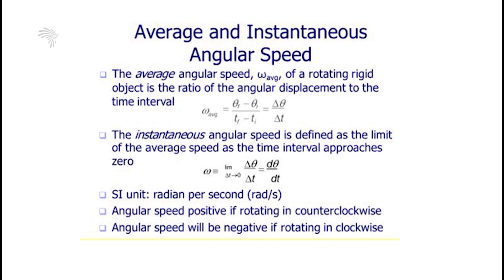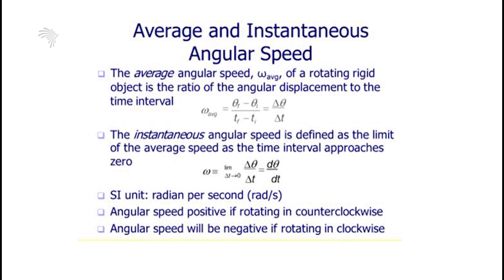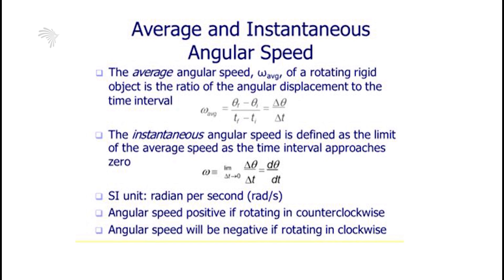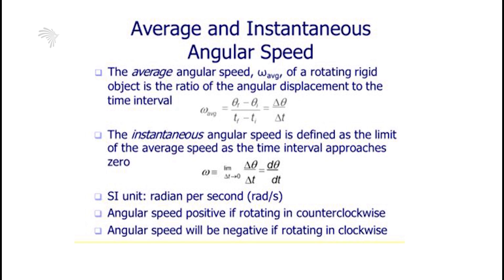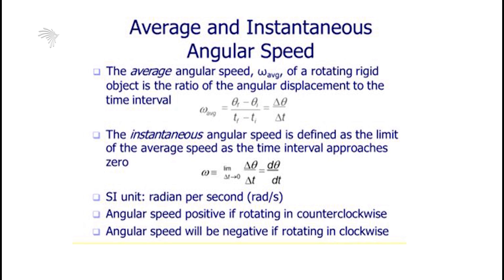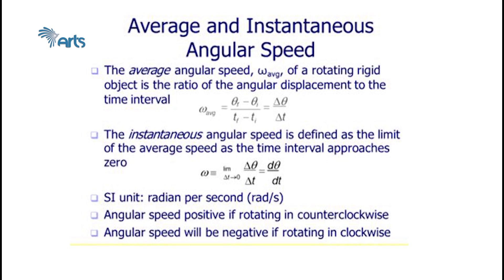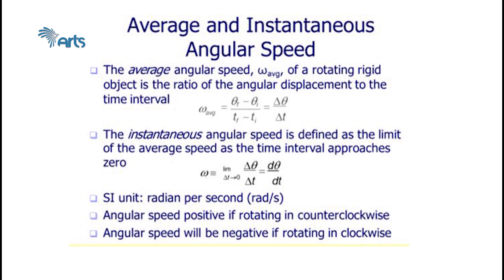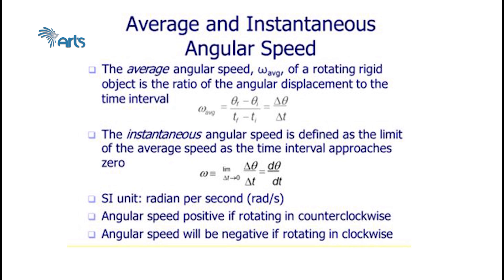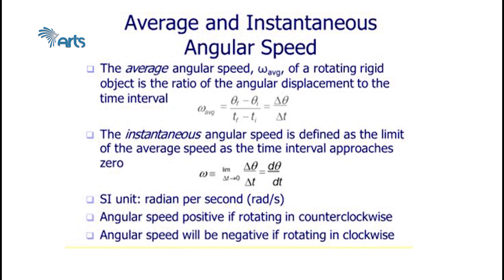The average angular speed omega of a rotating rigid object is the ratio of angular displacement to the time interval, calculated as change in theta over change in t. Instantaneous angular speed is the limit of change in theta over change in t as Δt approaches zero, or the first derivative of angular position with respect to time. The unit of angular speed or angular velocity is radians per second. Angular speed is positive if the rigid body rotates counterclockwise, and negative if it rotates clockwise.